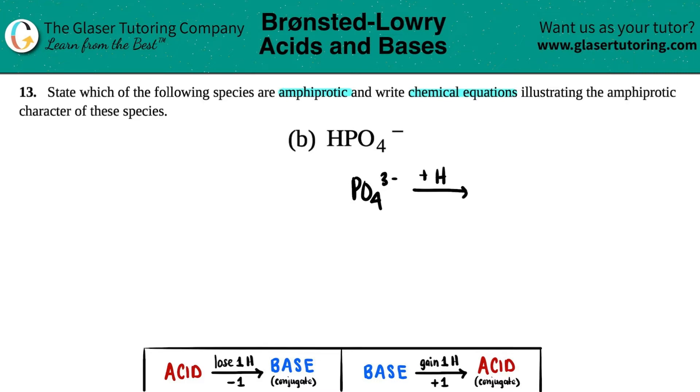HPO4 never exists as just a negative one charge because phosphate PO4 is always a negative three. So if you add just one hydrogen, it turns into HPO4, and you drop a number, so it becomes negative two, not negative one. We're going to go based off of what HPO4 should always be as a charge, and that's negative two.